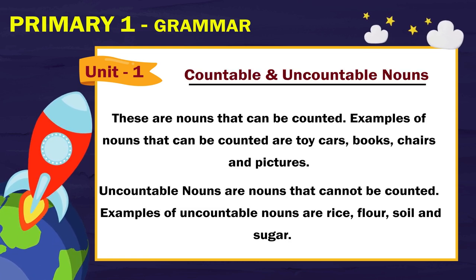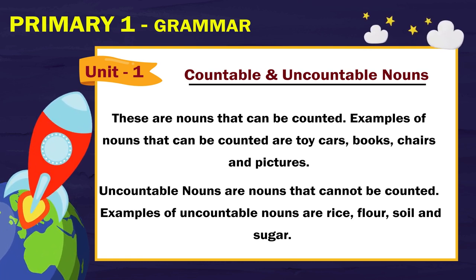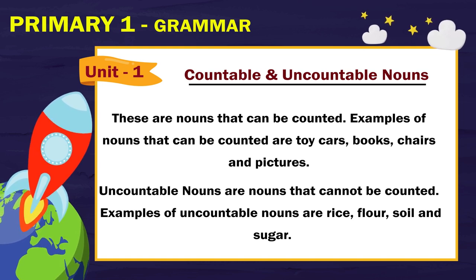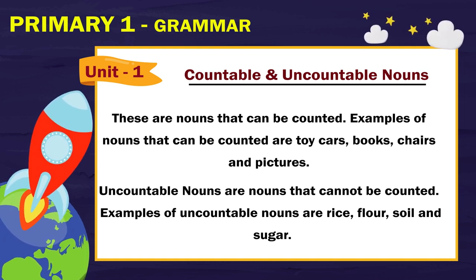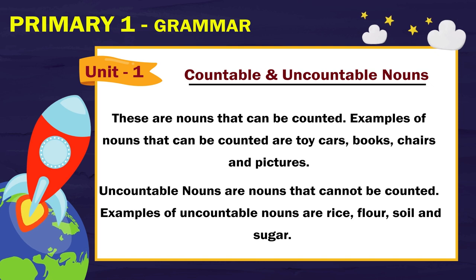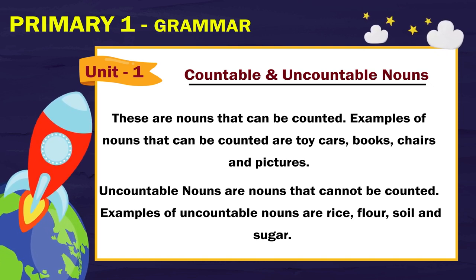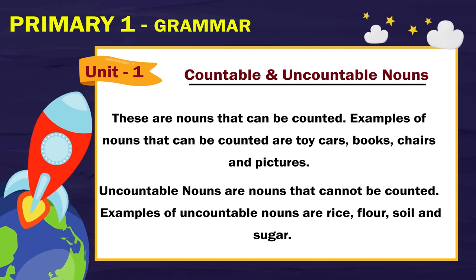Countable and uncountable nouns: countable nouns are nouns that can be counted. Examples are toy cars, books, chairs and pictures. Uncountable nouns are nouns that cannot be counted. Examples of uncountable nouns are rice, flour, soil and sugar.